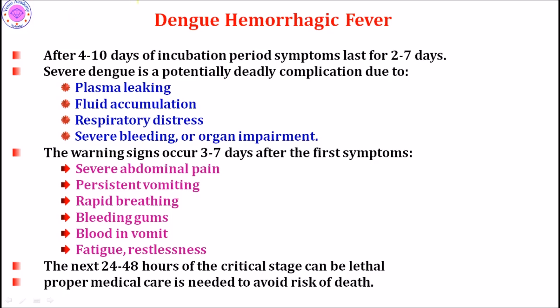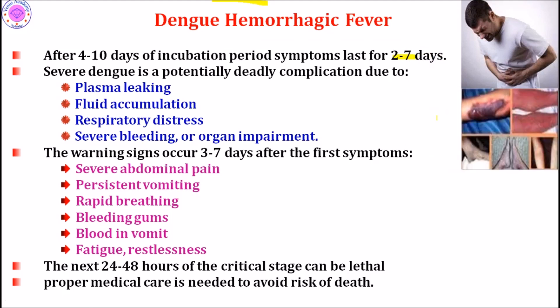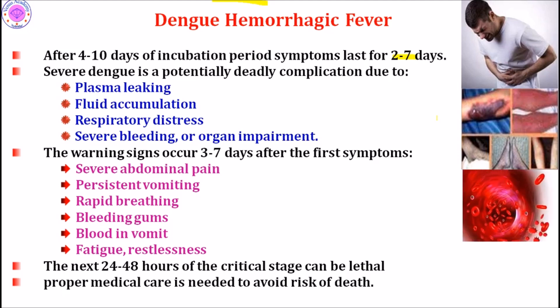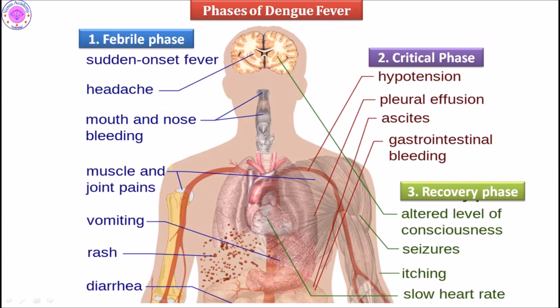Symptoms last two to seven days after the incubation period of four to ten days. Severe dengue is a potentially deadly complication presenting with severe abdominal pain, persistent vomiting, rapid breathing, and bleeding in the gums. The critical stage in the next 24 to 48 hours can be lethal, and immediate hospitalization is required.